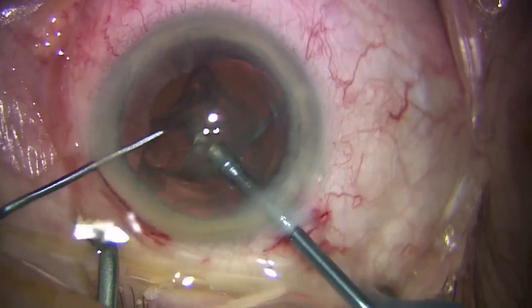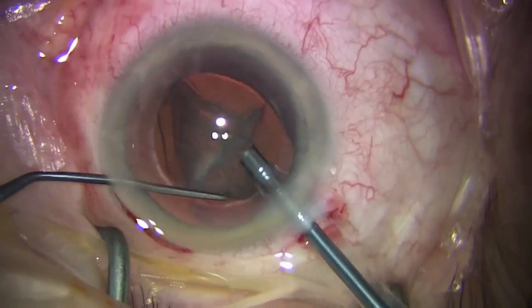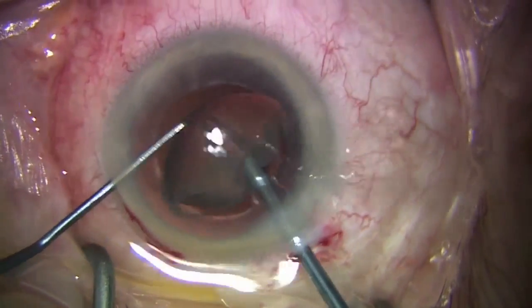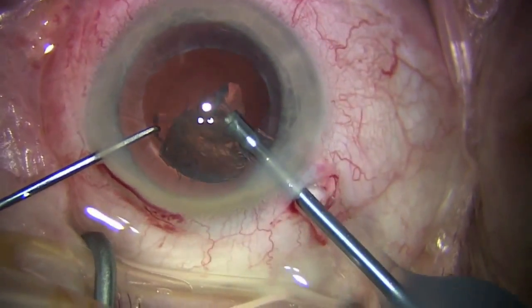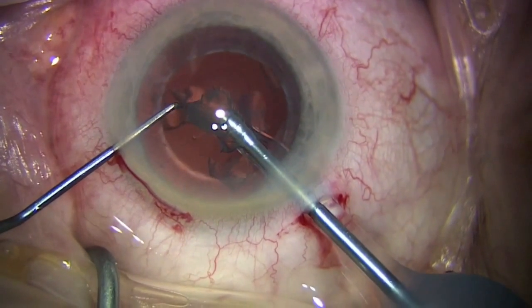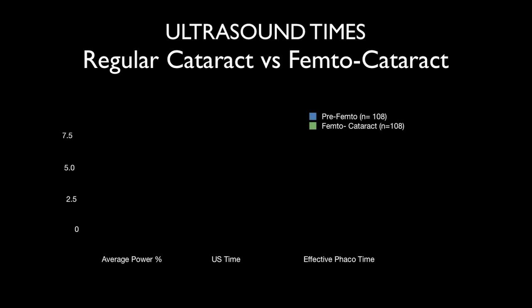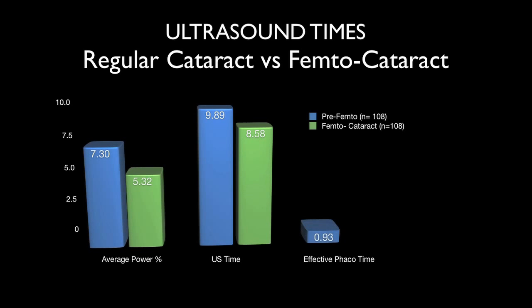How does the use of femtosecond laser surgery influence ultrasound times? To evaluate this, we compared ultrasound times of our first 108 laser cataract cases to 108 cases of conventional cataract surgery performed immediately prior to introduction of laser cataract surgery at our institution. This graph illustrates the differences in average power, ultrasound time, and effective phacoemulsification times for conventional versus femtosecond laser cataract surgery. All parameters were statistically significantly lower with laser cataract surgery.